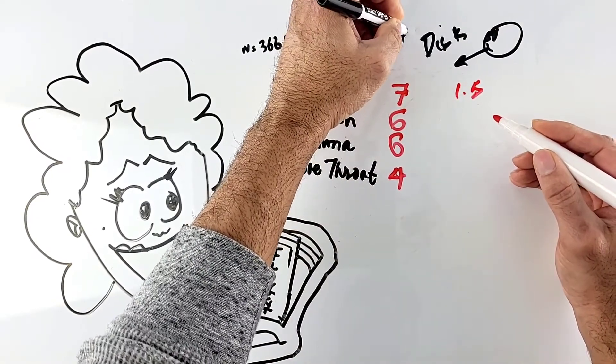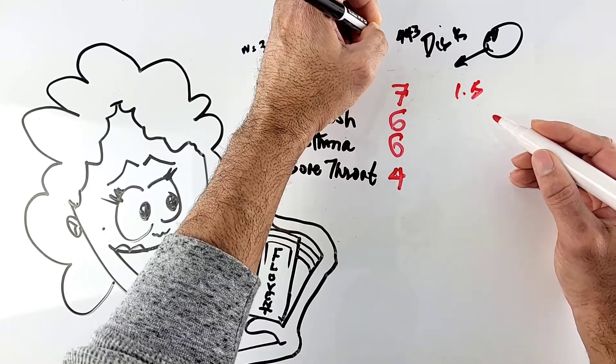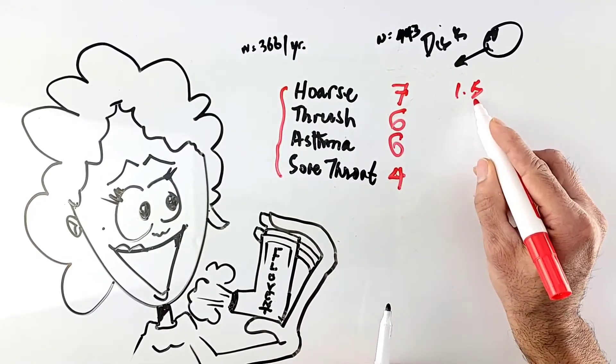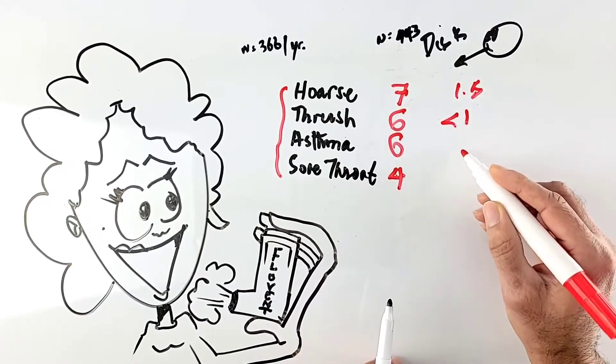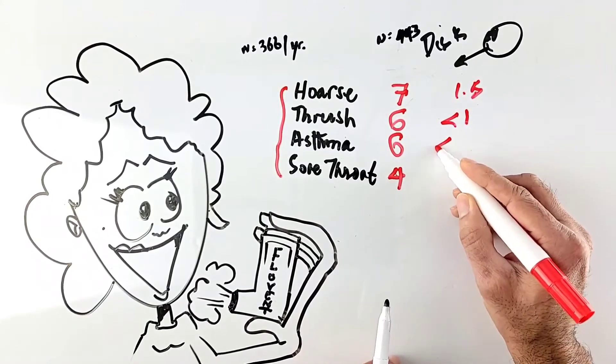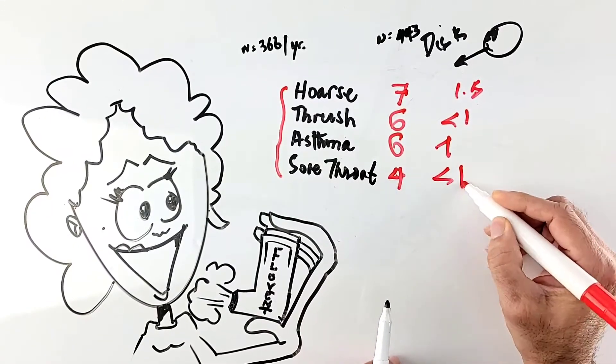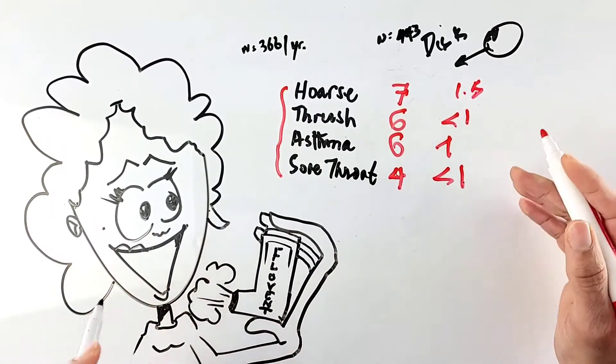So dramatically less hoarseness. Also for thrush, less than 1%. For asthma, 1%. For sore throat, less than 1%. So what is going on here?